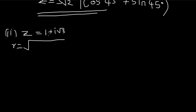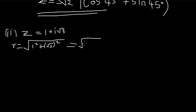That is √(1 + 3) since (√3)² = 3. So r = √4, which equals 2. Now let us find the argument, θ. The argument of z is just the angle.